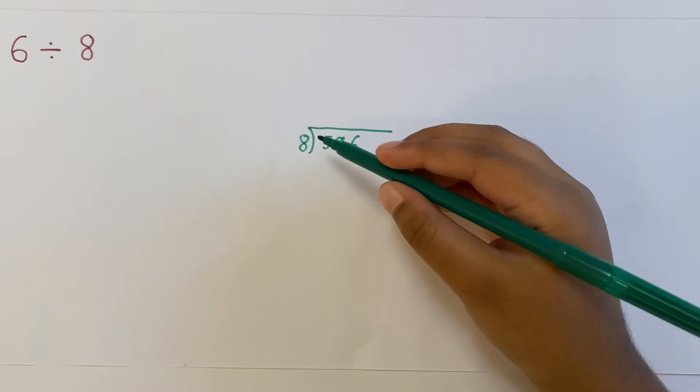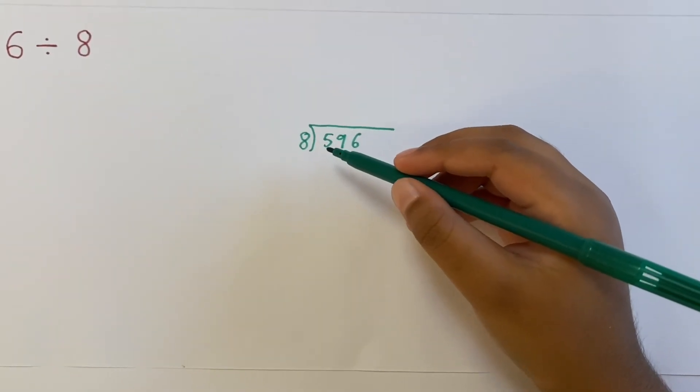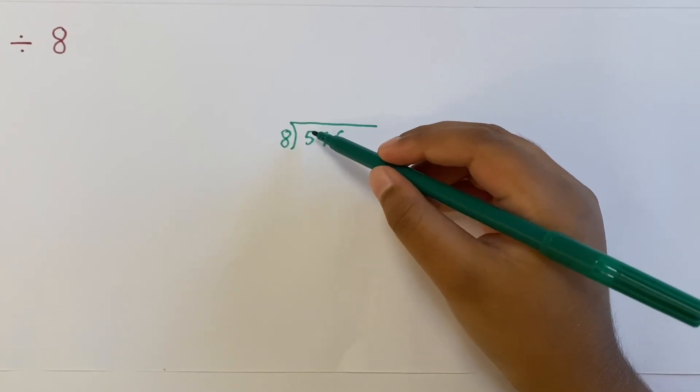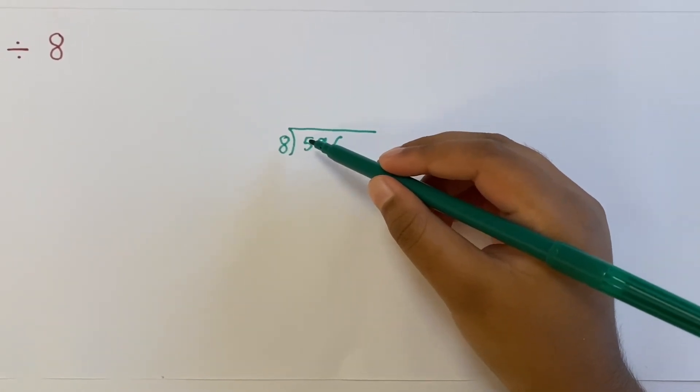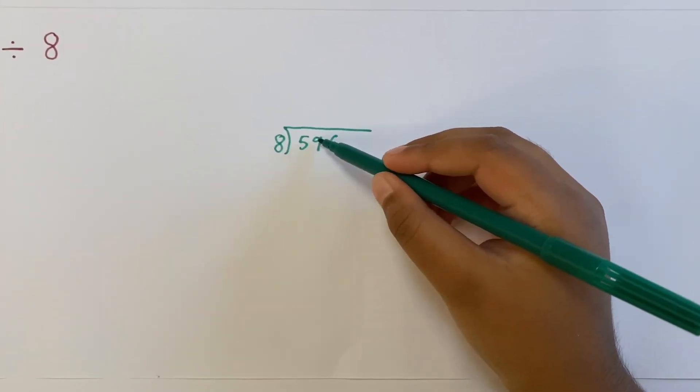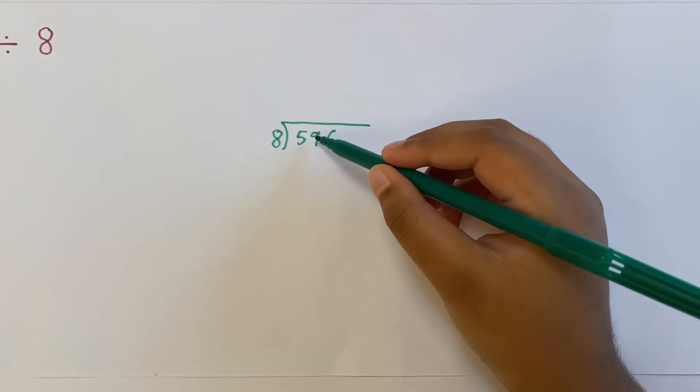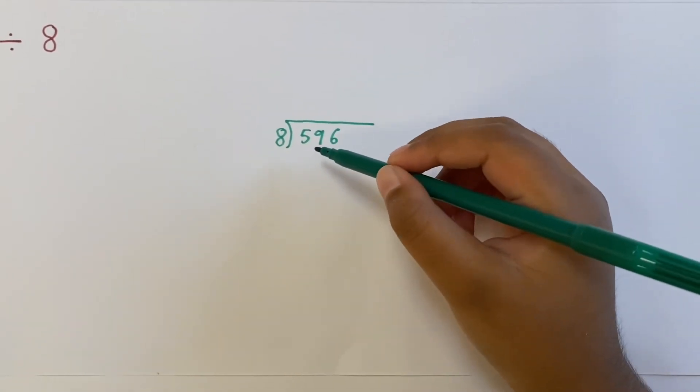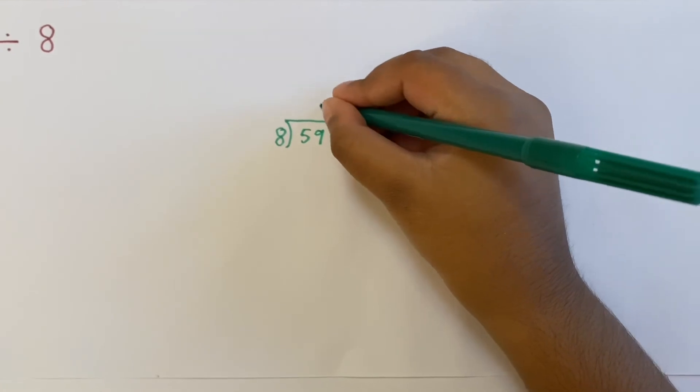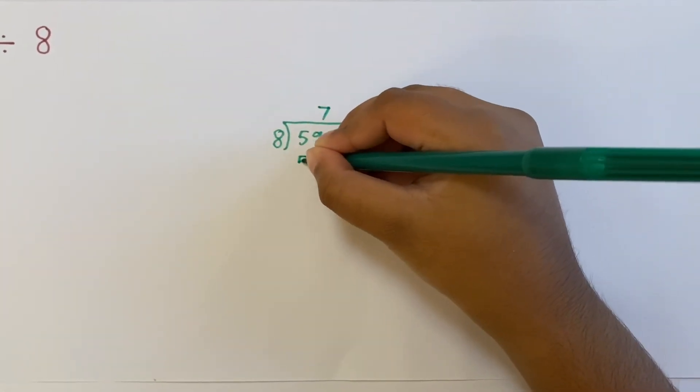Write the equation in its calculating form. Now, 8 doesn't go into 5, so we would need to combine the next digit, 9. Now, 8 times 7 is 56.